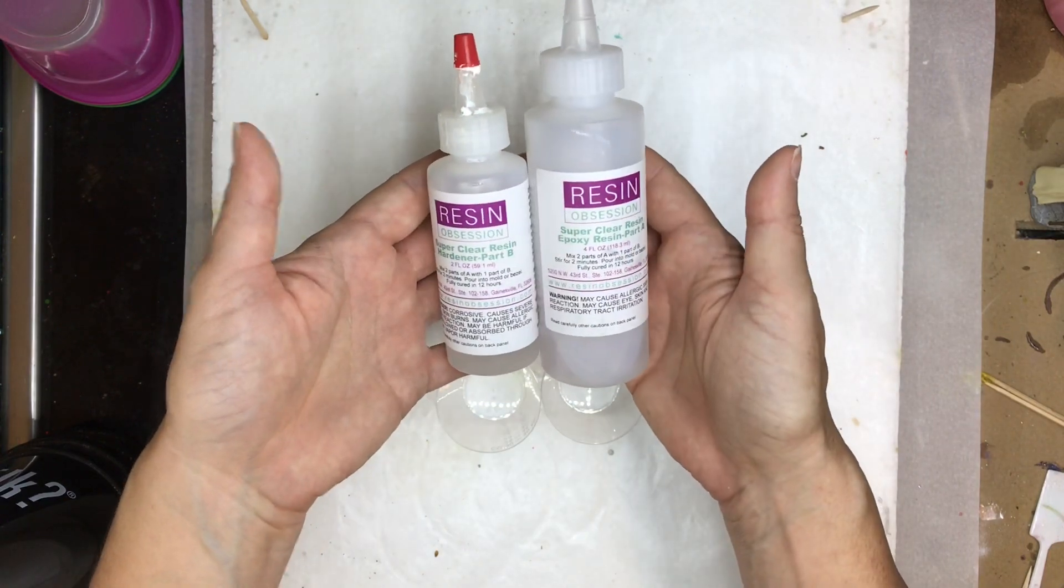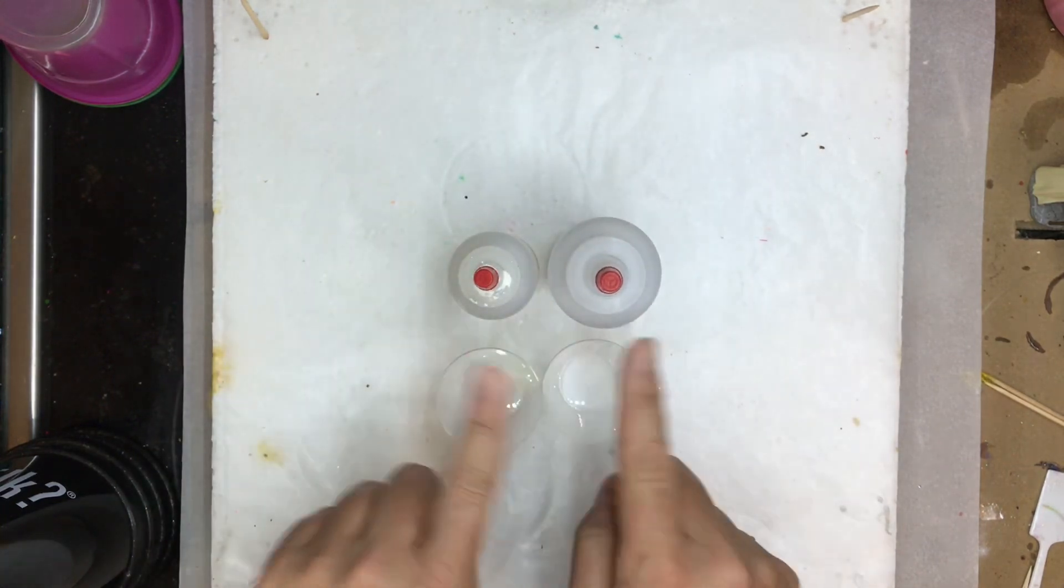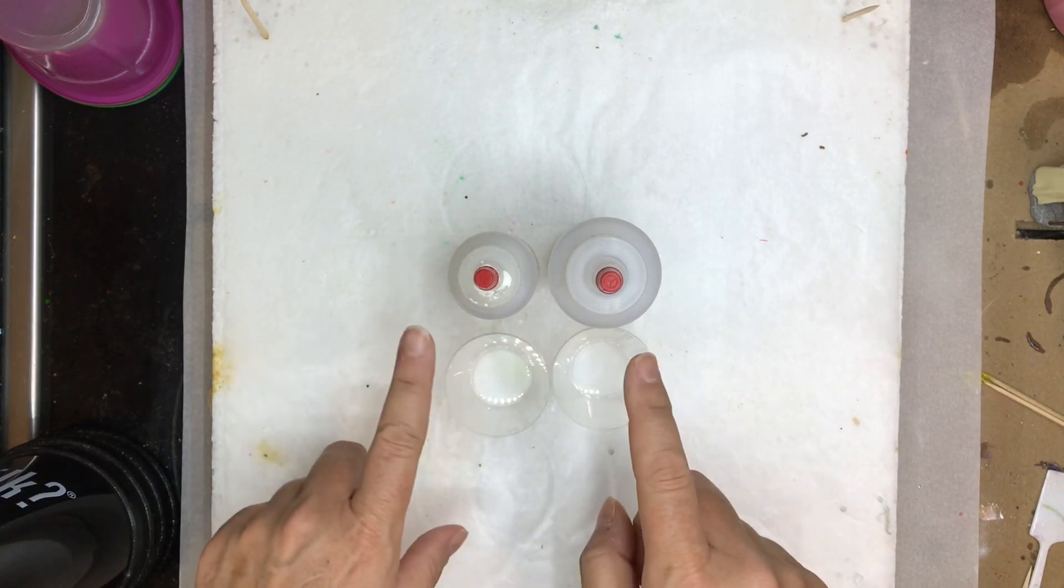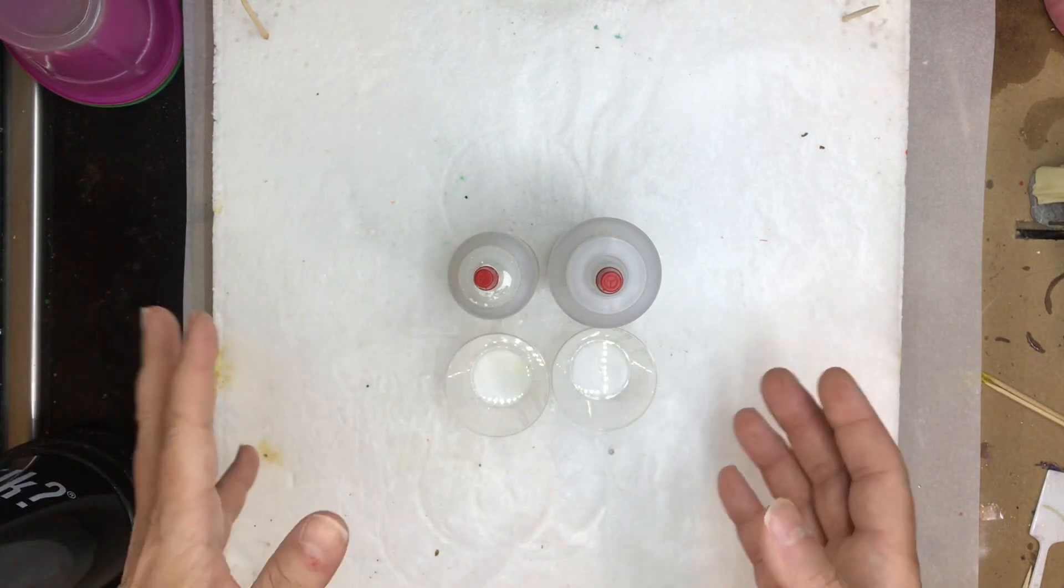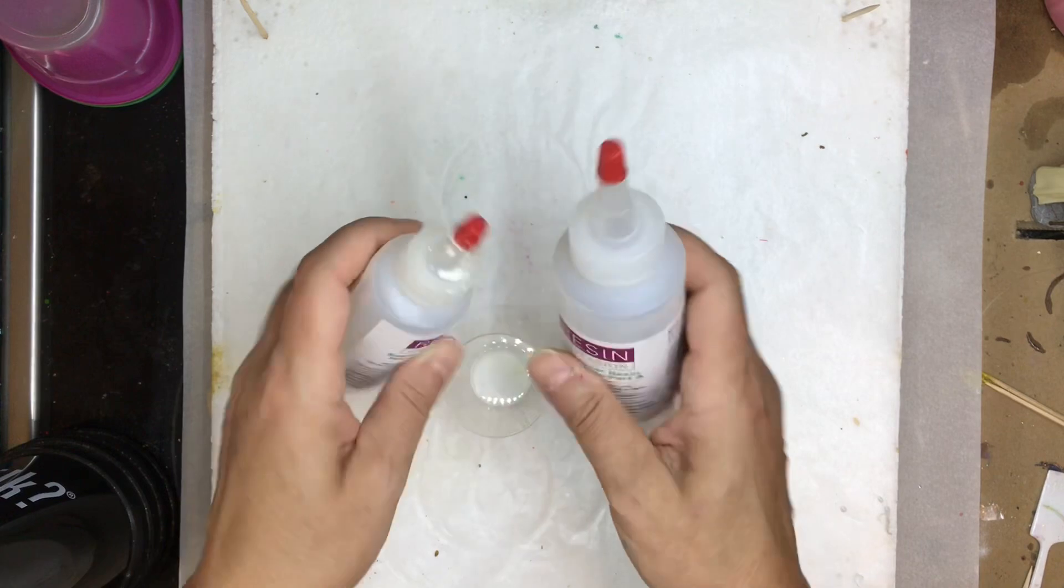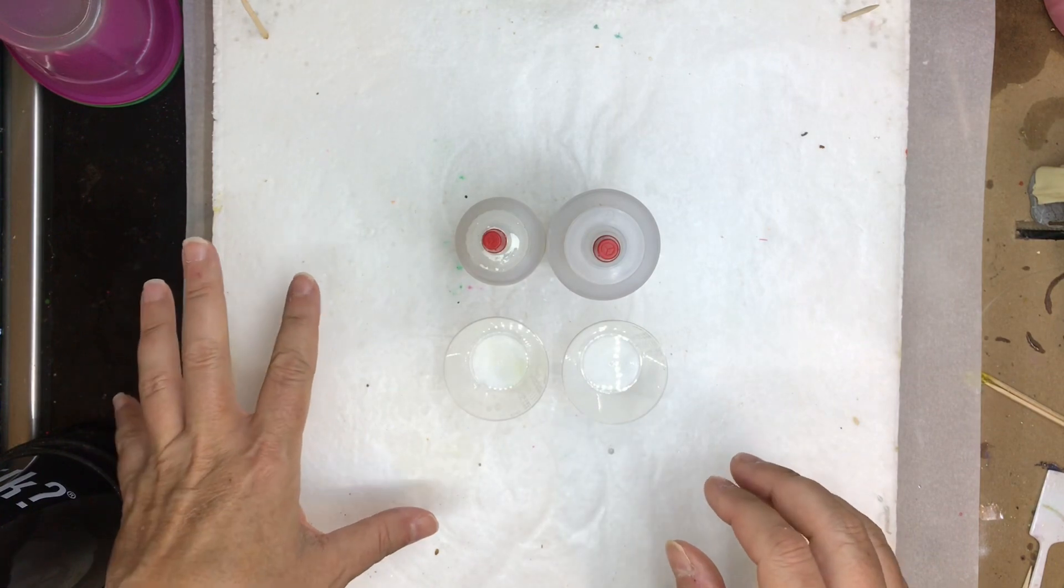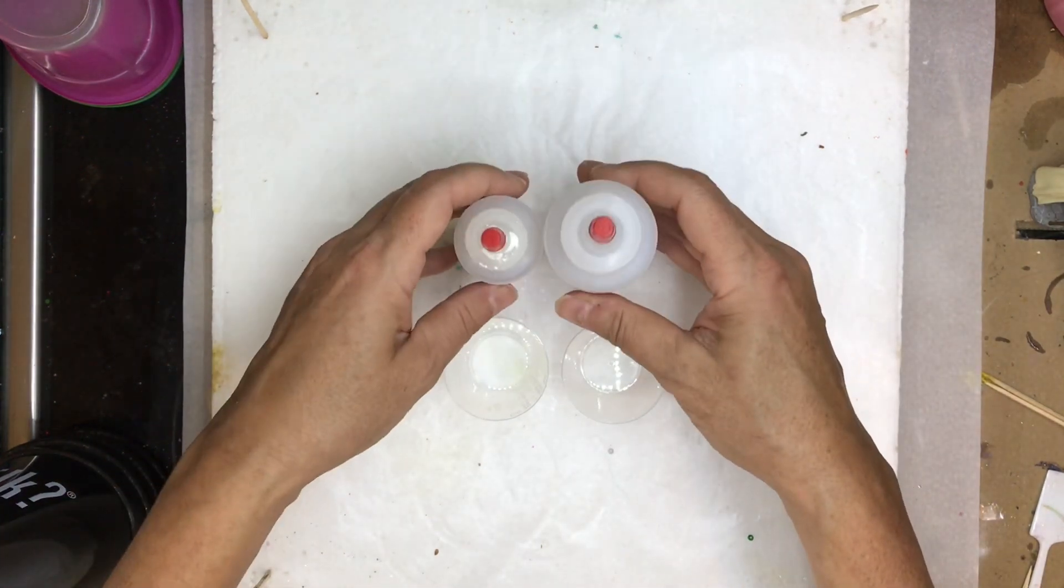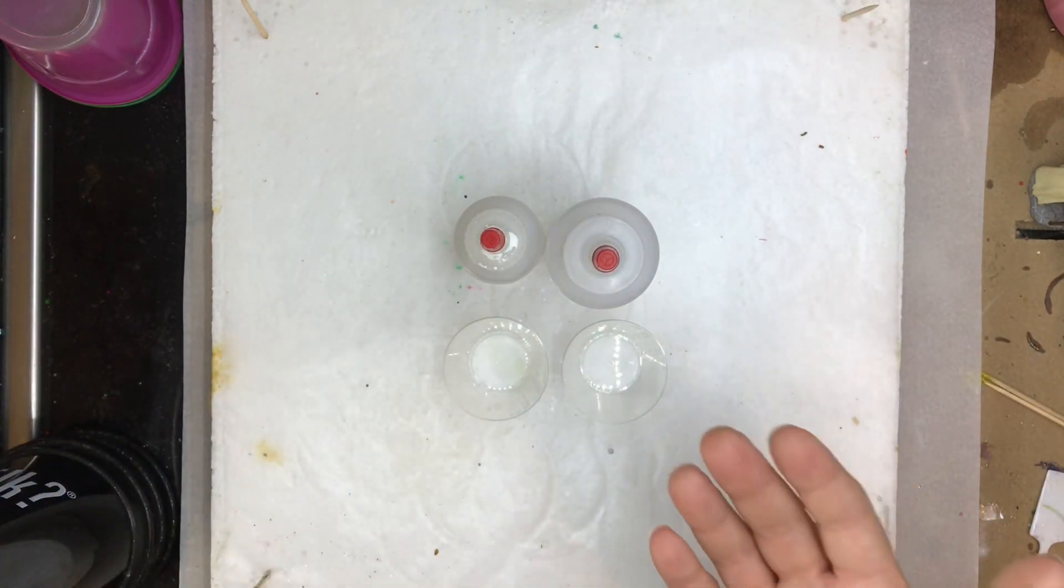For the super clear resin, the pot time is about 20 to 25 minutes, and that pot time starts once you start mixing the two parts together. That's a pretty important point because you don't want to start mixing, then set a timer, and mentally think you've got 20 minutes. Once the two parts start mixing together, that pot time starts ticking. I like to have a timer close by to remind me my pot time's coming to an end. Once the resin's pot time has expired, hopefully you've gotten it into your molds. The gel time should occur shortly thereafter.